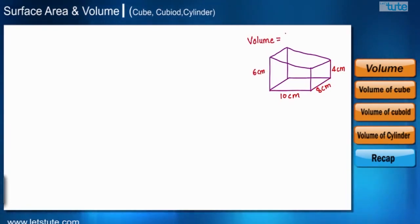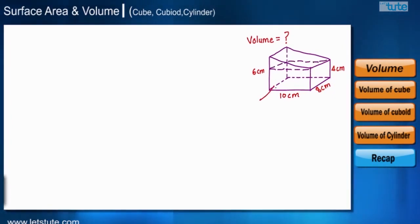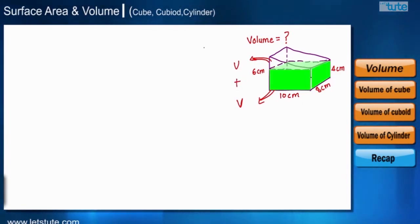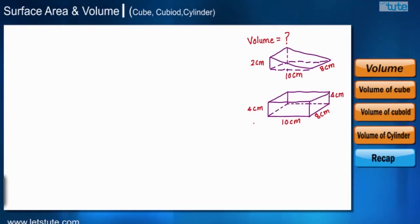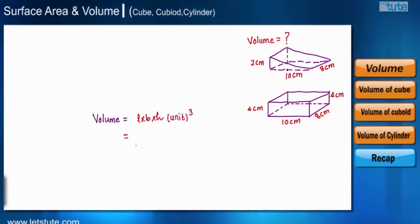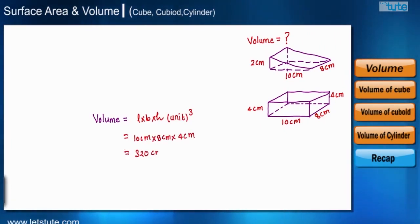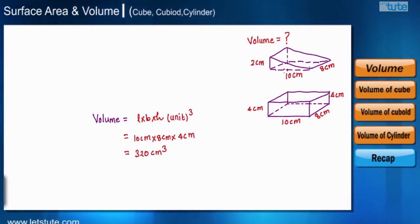We break it into two parts, find the volume of each part separately, then add them up to get the total volume. After separating at the height of 4 cm, the bottom part is a cuboid with length 10 cm, breadth 8 cm, and height 4 cm. Its volume is 10 × 8 × 4 = 320 centimeter cubed.